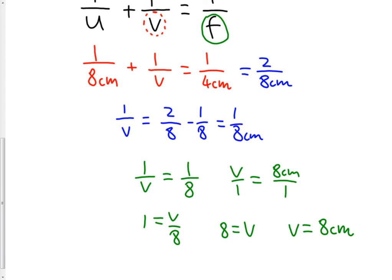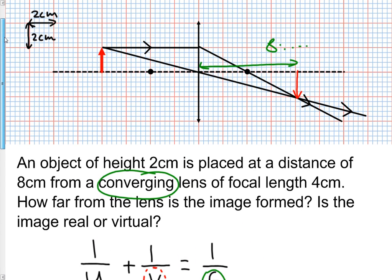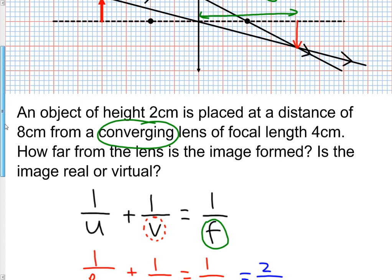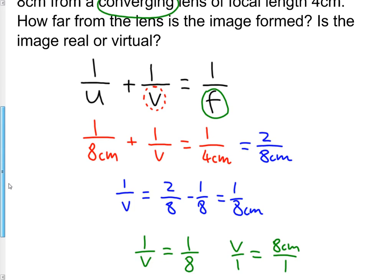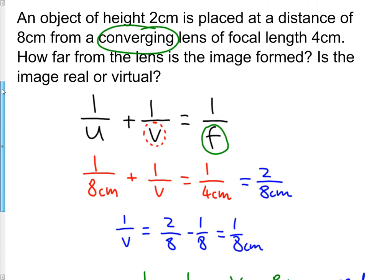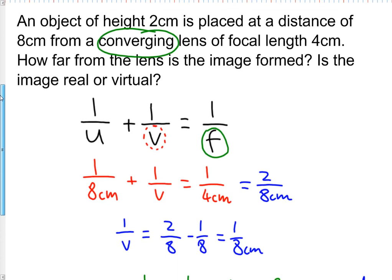From the ray diagram we can see that this is a real image. It's a real image because it's formed by real rays of light converging at a point. From the lens formula alone, there's a second convention which is about v. If v turns out to be positive, which it does in this case, that 8cm is plus 8cm, if it's positive then it's a real image. So you could have answered this entire question without drawing a diagram at all, just by using the lens formula.